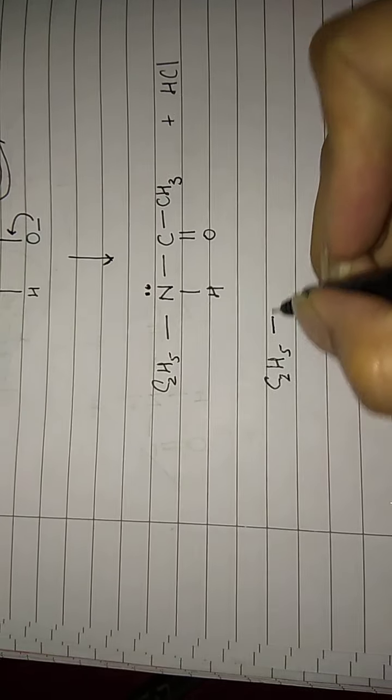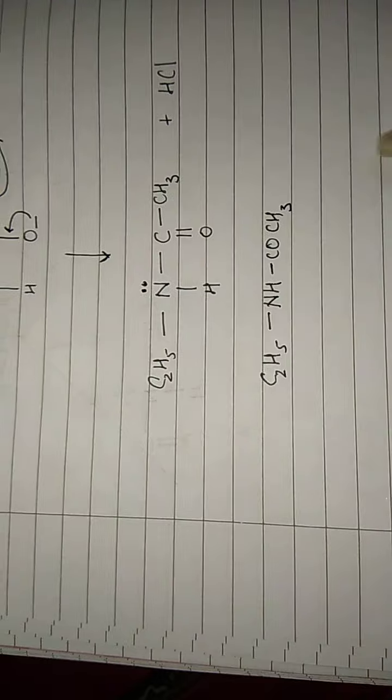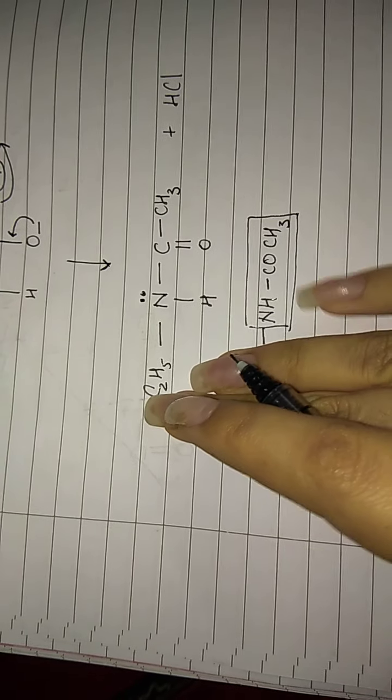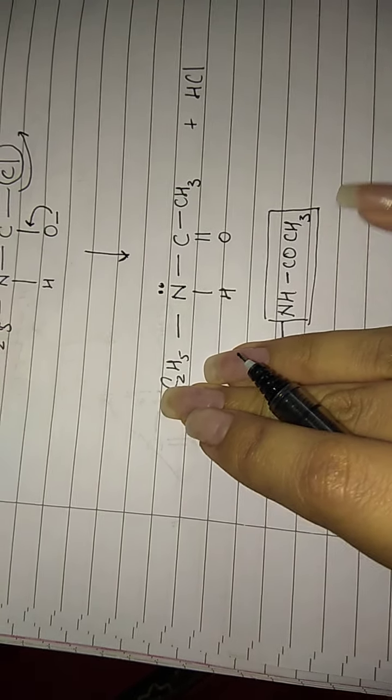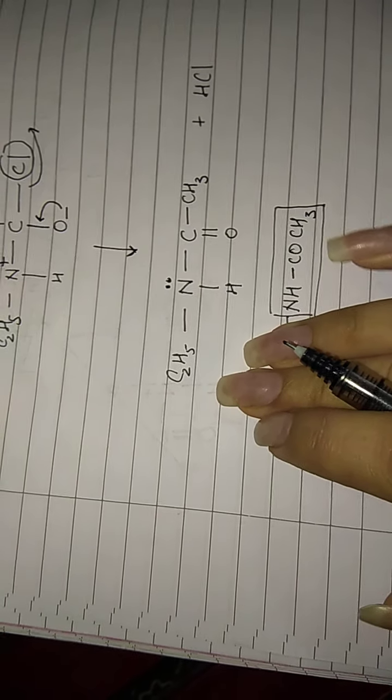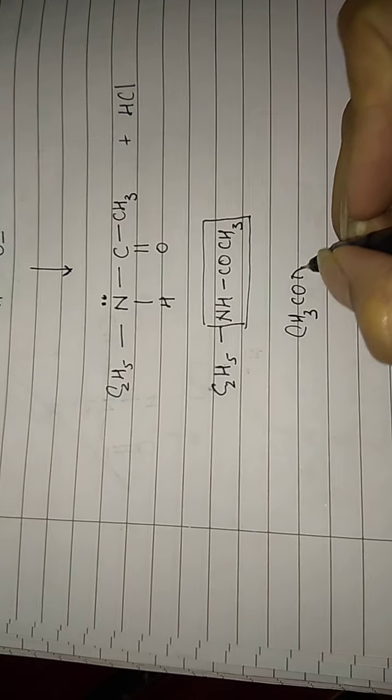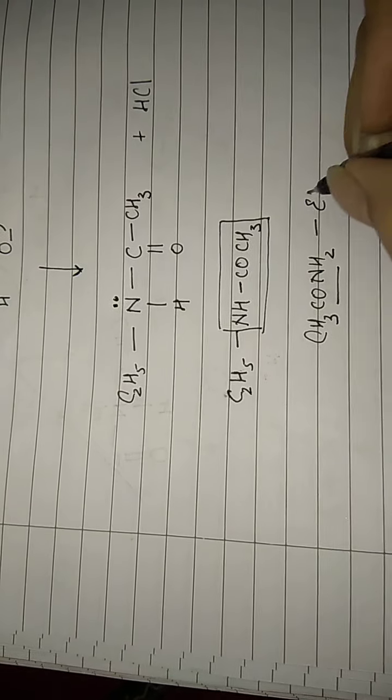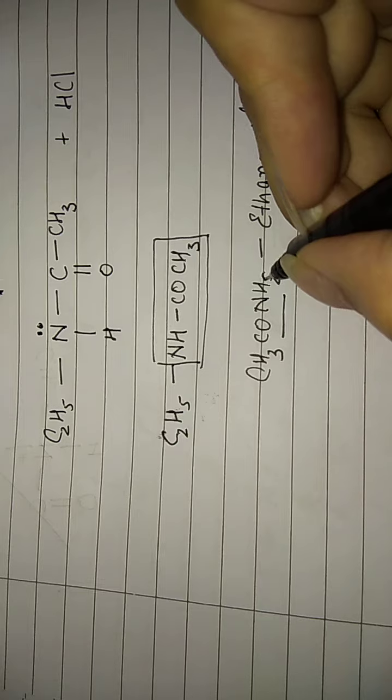Now how are you going to name this compound? If I write it in condensed form, it will be C2H5NH-COCH3. If you see this and hide this part, you find this is CH3-CO-NH. Had there been no such group, it would have been CH3CONH2, which is the amide group with two carbon atoms, called ethyl amide.